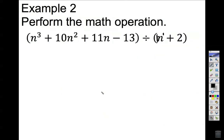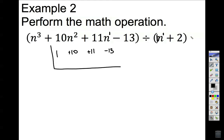To do synthetic division, the polynomial still goes inside and the divisor outside. We are not dealing with variables, but we need to make sure terms are in descending order: to the third, to the second, to the first, and the constant. I write their coefficients: 1, positive 10, positive 11, and negative 13. For the divisor, I take the opposite — the opposite of positive 2 is negative 2. That negative 2 out here handles the subtraction portion.